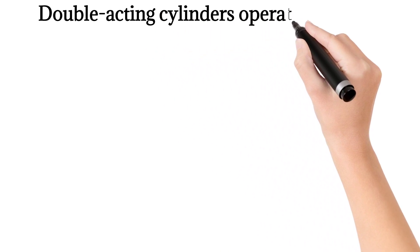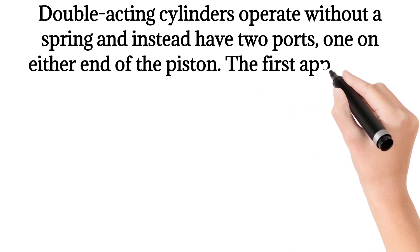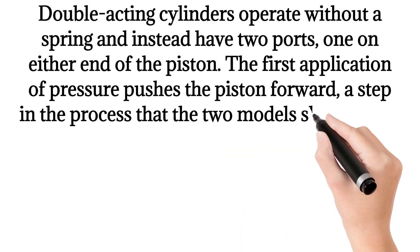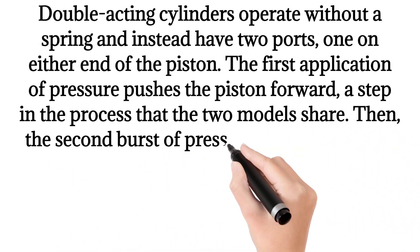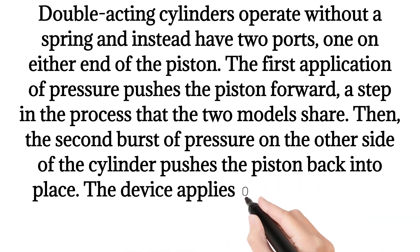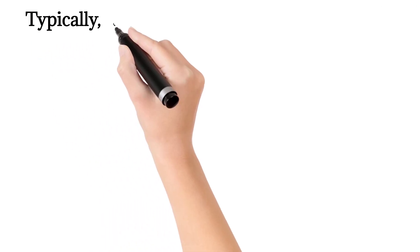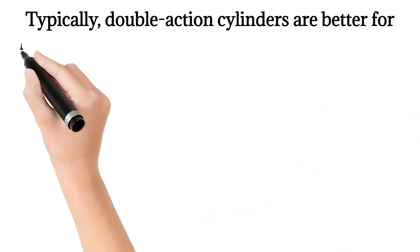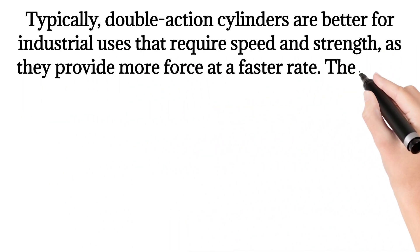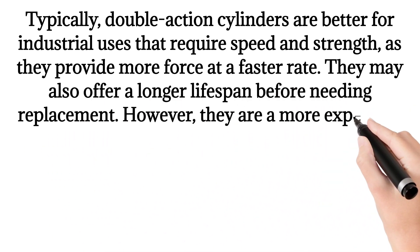Double-acting cylinders operate without a spring and instead have two ports, one on either end of the piston. The first application of pressure pushes the piston forward. Then, the second burst of pressure on the other side of the cylinder pushes the piston back into place. The device applies pressure back and forth to create a smooth linear motion. Typically, double-acting cylinders are better for industrial uses that require speed and strength, as they provide more force at a faster rate. They may also offer a longer lifespan before needing replacement. However, they are a more expensive option in comparison.